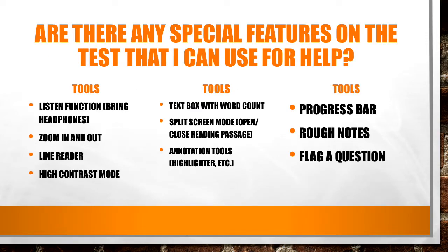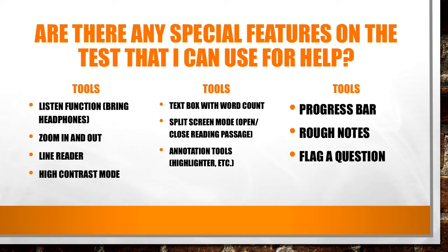A great advantage to having this online test is that there are many special features you can use for help. There is a listen function — we will be providing headphones for those who want them. You can zoom in and out, use a line reader to focus on the line you are reading, switch to high contrast mode, use a text box, and get a word count. You can split the screen — which is highly recommended — to have the reading selection on one side and the questions on the other. There are annotation tools such as highlighters, a progress bar, a section for rough notes, and you can flag a question and go back to it.